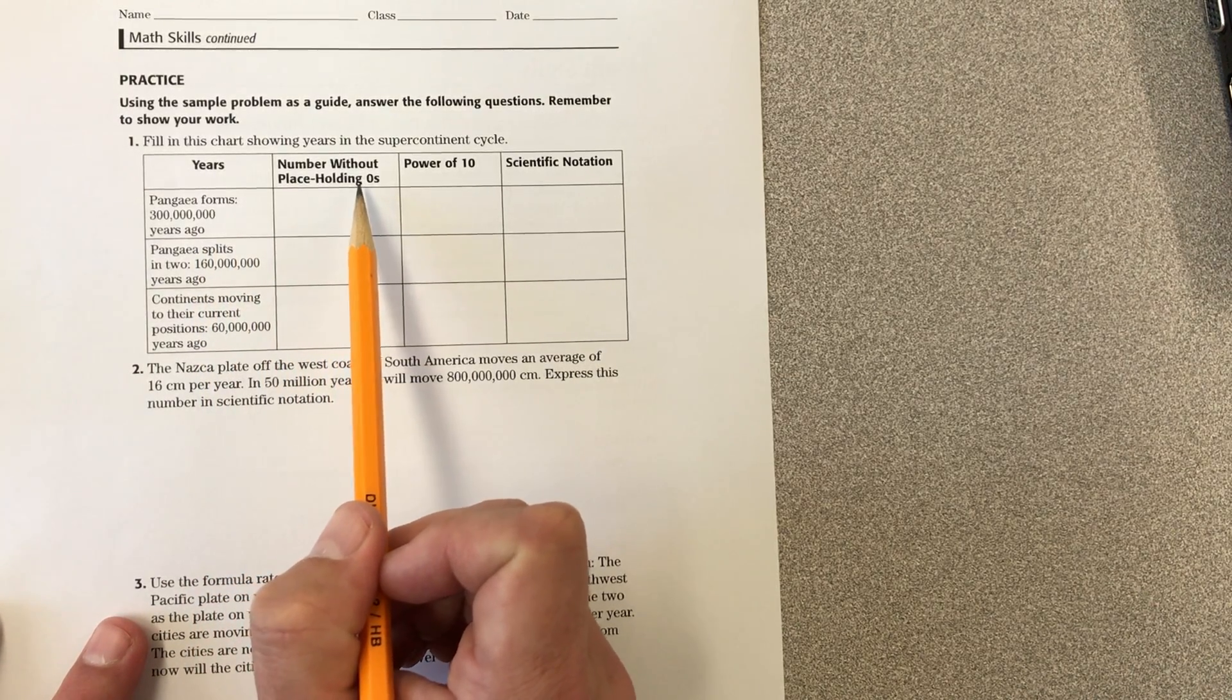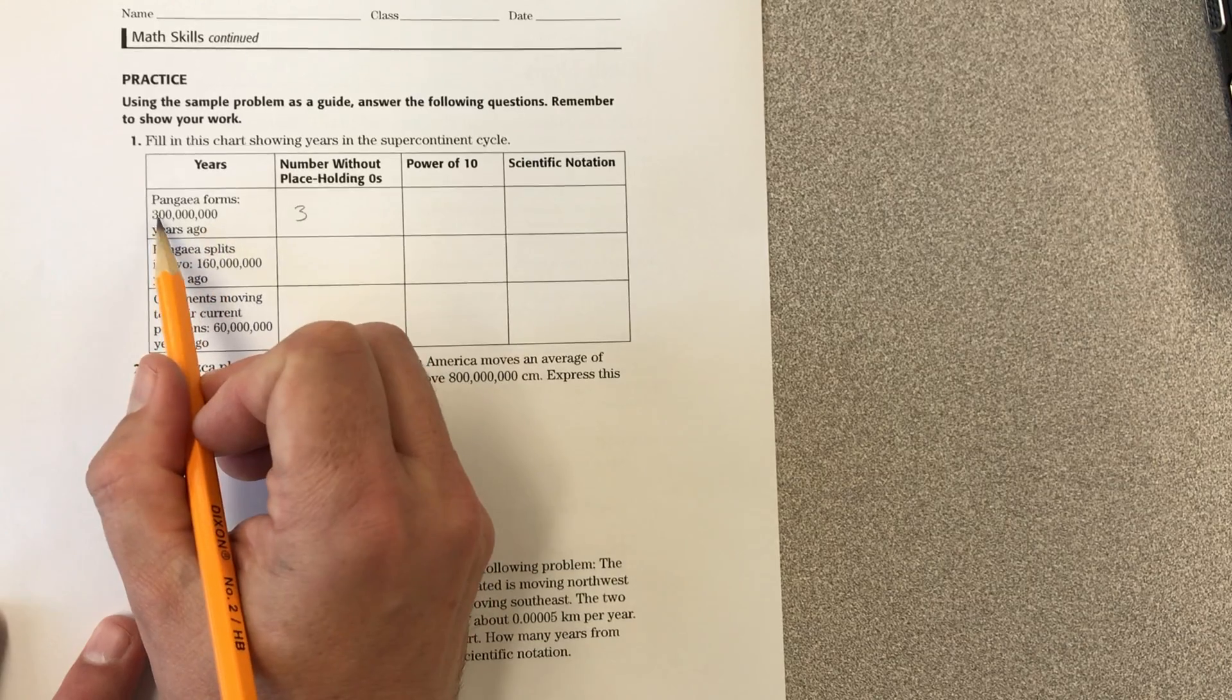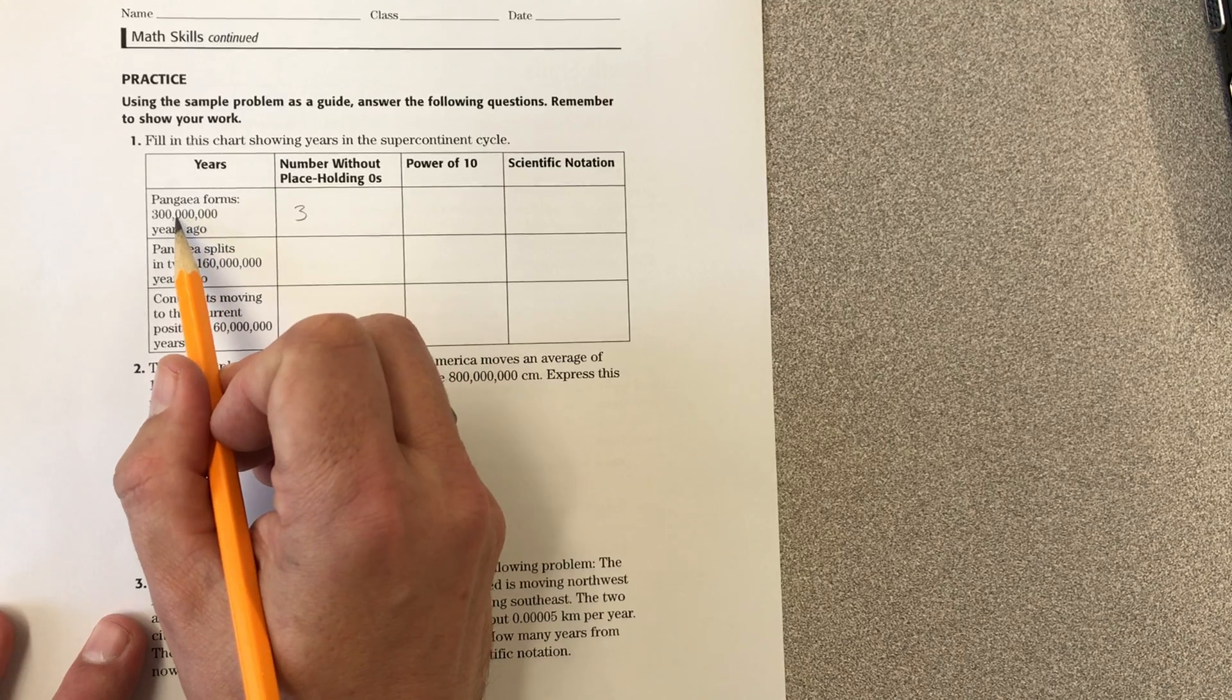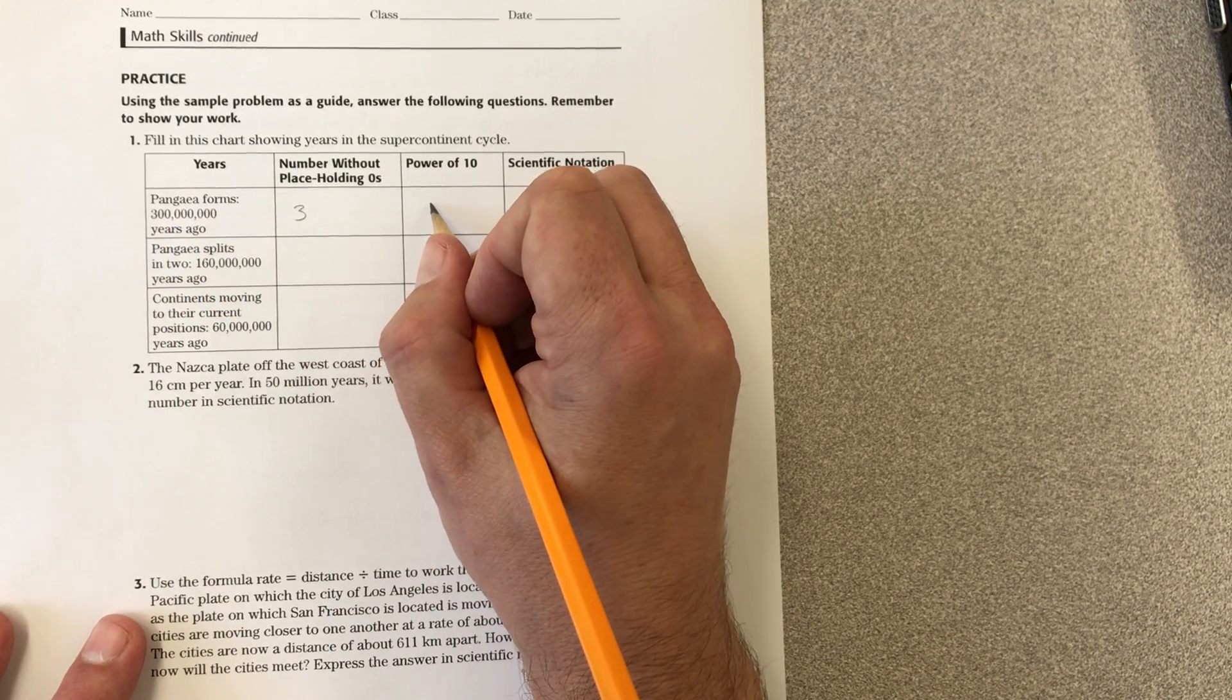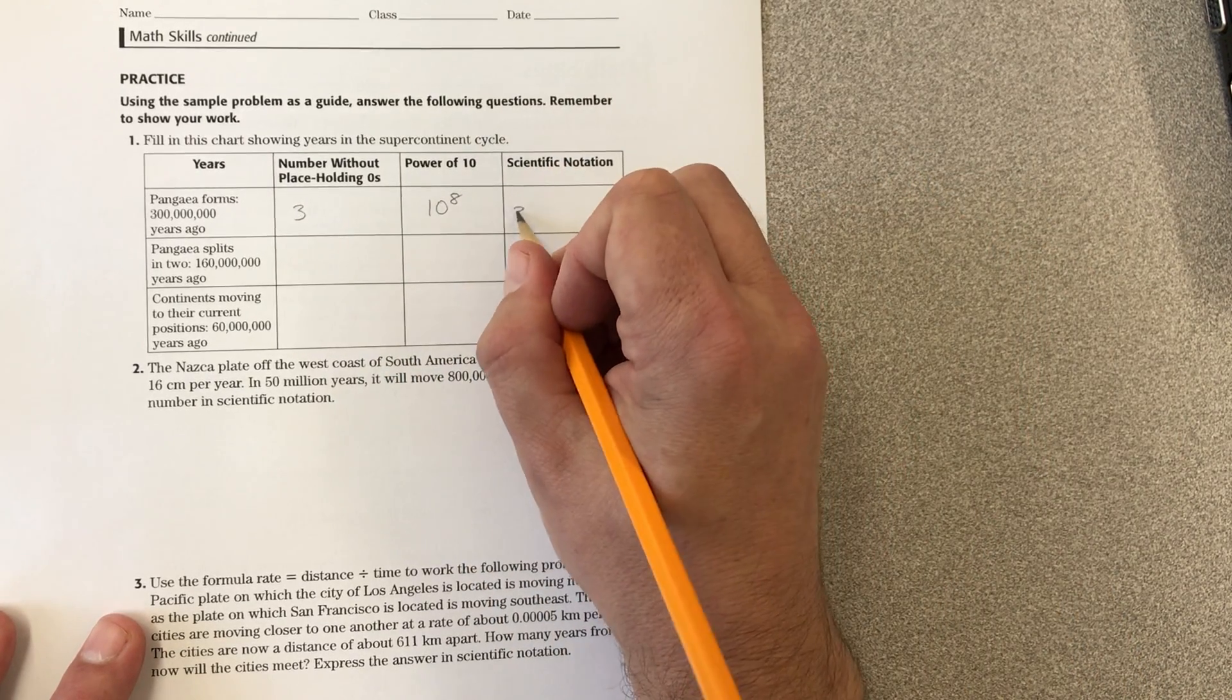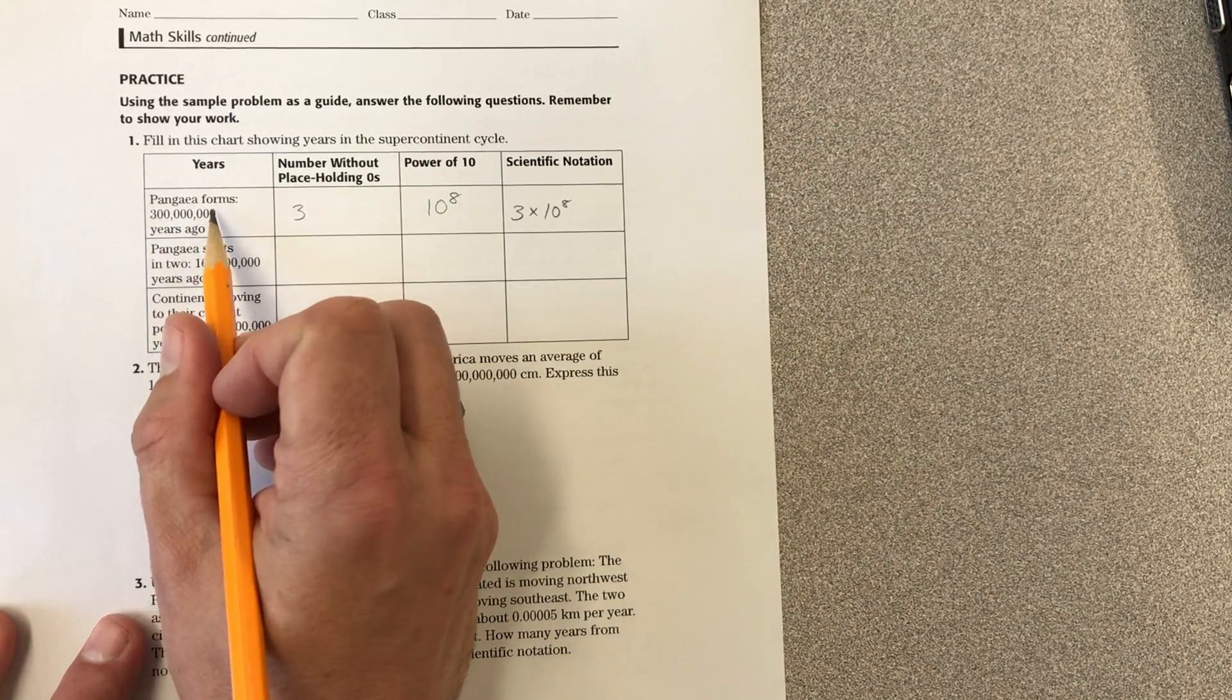If you look at the example, it tells you how to find that. In this case it's just 3 because there's no numbers after three other than zeros. The power of 10: we can count up 3, 6, 7, 8, so power of 10 is going to be 10 to the 8th. Then we write the scientific notation 3 times 10 to the 8th, and that's the same as this number right here.